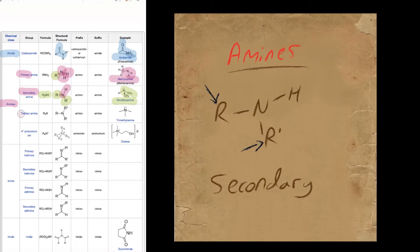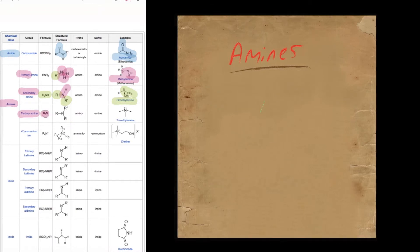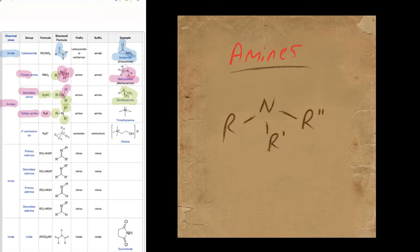Just to re-emphasize where the primary, secondary, and tertiary names come from: primary comes from having one alkyl group, secondary two alkyl groups. That brings us on to tertiary amines, which have three alkyl groups connected to them, and an example would be trimethylamine or triethylamine.